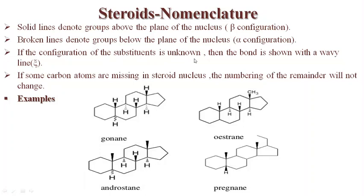If the configuration is not known, the bond is shown with a wavy line — as seen in gonane and androstane with wavy lines. This means the configuration is unknown: the group could be either above or below the plane of the nucleus. If some carbon atoms are missing in the steroid nucleus, the numbering of the remaining atoms does not change — this is a very important point.